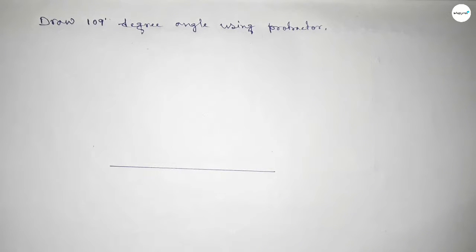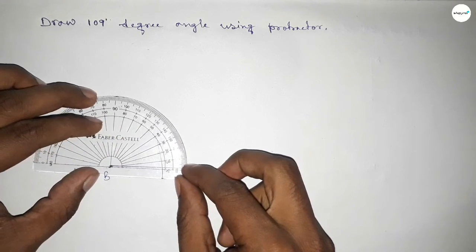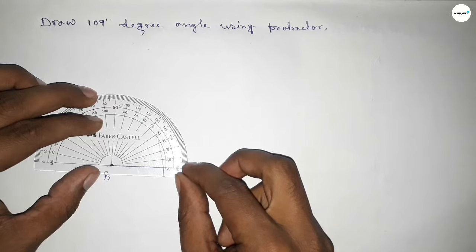Next, taking here point B and here C. Now putting the protractor on the point B perfectly, then counting the angles.